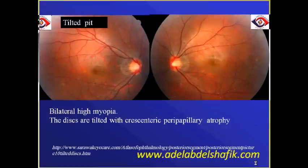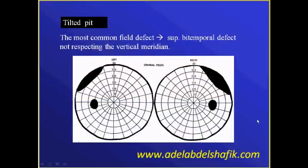Another example is tilted disc. Here we have bilateral high myopia and the discs are tilted with peripapillary atrophy. You notice that the neural tissue is not present in these areas, resulting in enlargement of the cup. Tilted discs in most cases get associated visual field defects, usually being a superior bitemporal defect not respecting the vertical meridian.